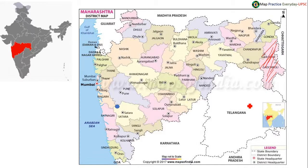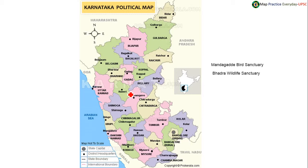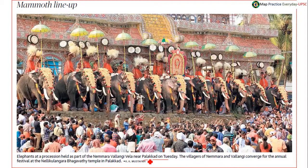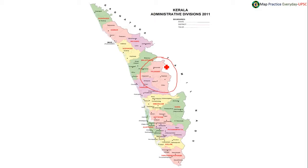In Karnataka, political campaigns happened in Shivamogga and Haveri districts. Shivamogga is famous for Mandagadhi Bird Sanctuary and Bhadra Wildlife Sanctuary. Palakkad district was also in news. Palakkad is in Kerala, in the middle part of Kerala — it doesn't have a coastal line. Palakkad is below Malappuram and above Ernakulam, and to the west there is Thrissur.